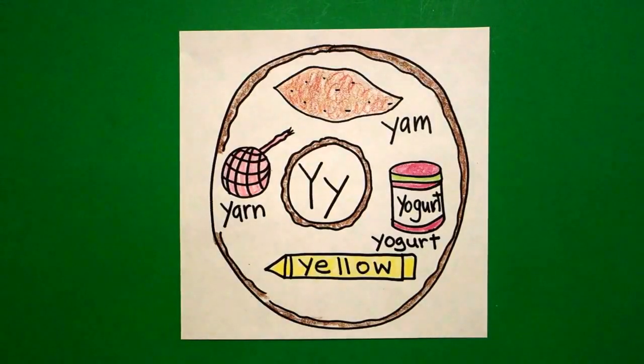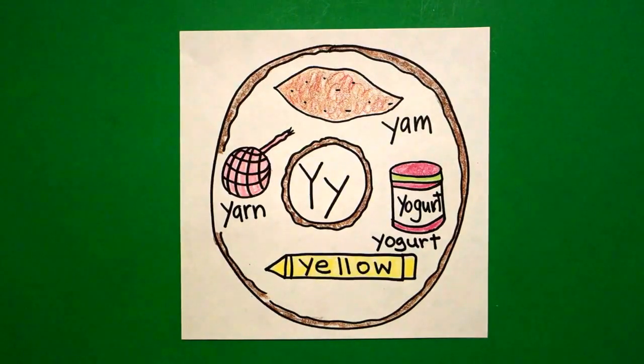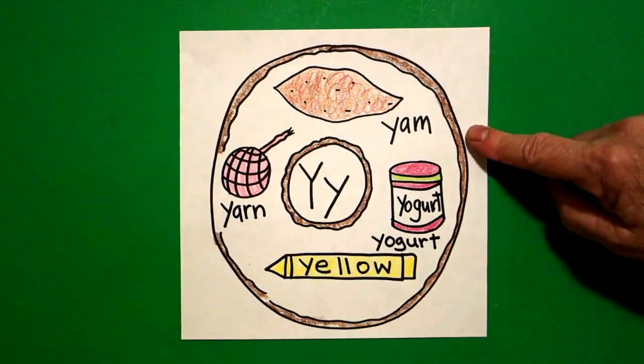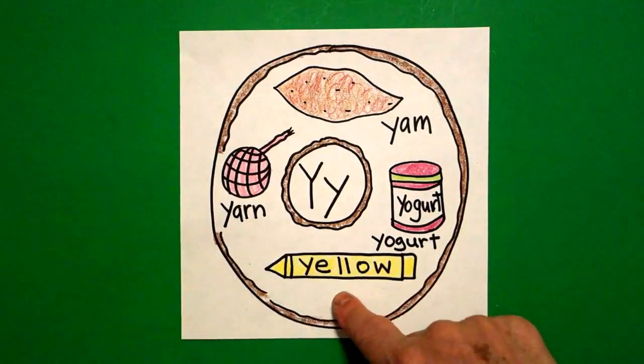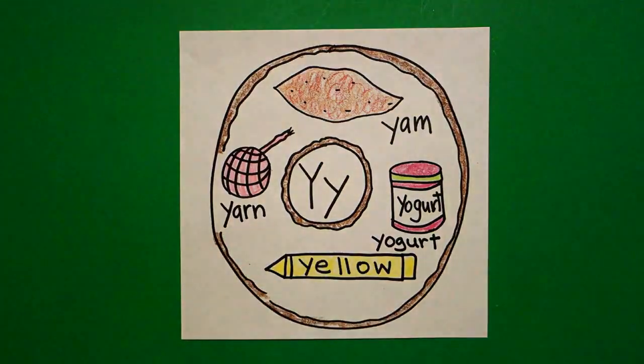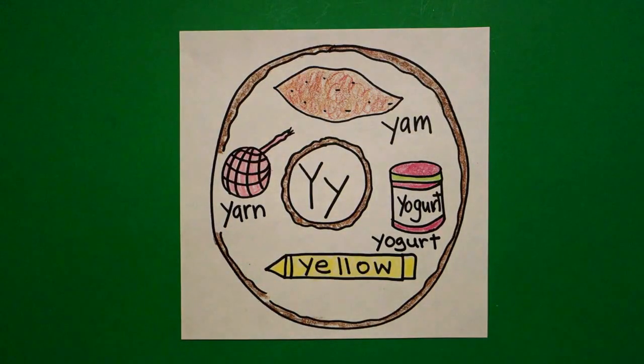Okay, here's my alphabet donut for the letter Y. All colored in. Beginning sound, yah, yam, yah, yogurt, yah, yellow, yah, yarn. Okay, bye bye.